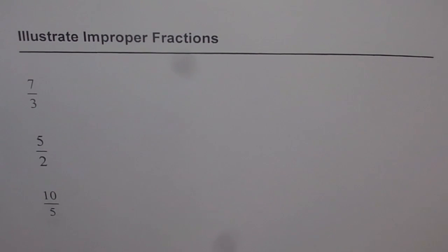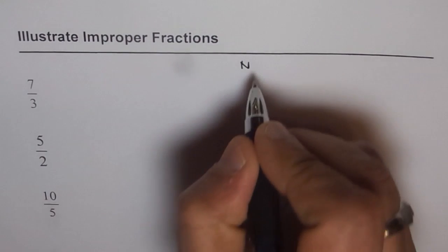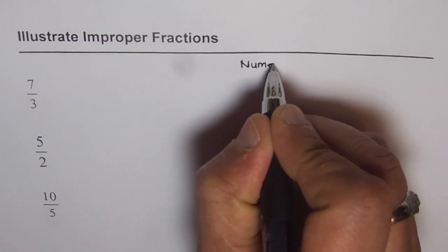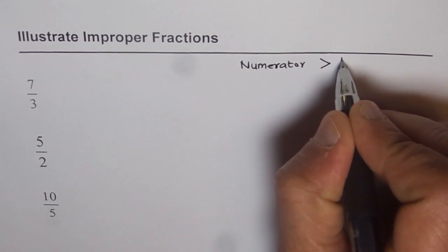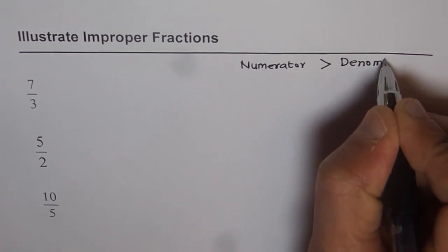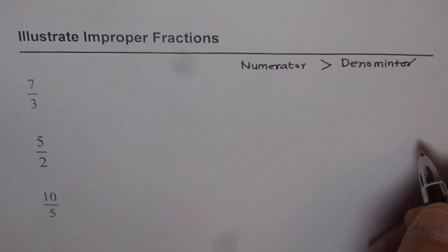So what are improper fractions? The fractions in which numerator, that means the number on the top, numerator is greater than denominator. So these fractions are called improper.